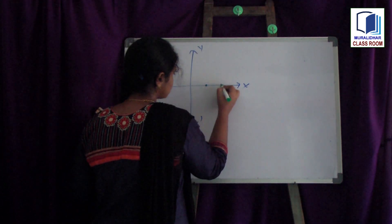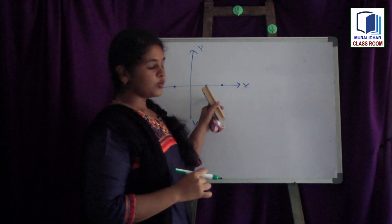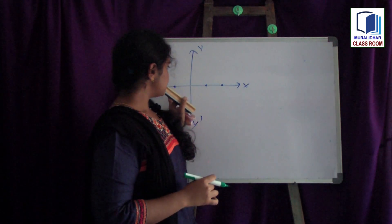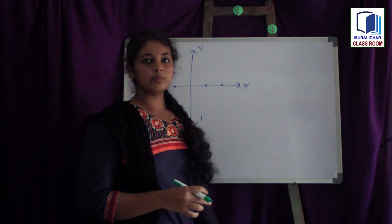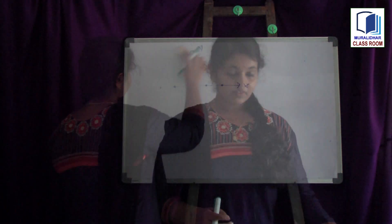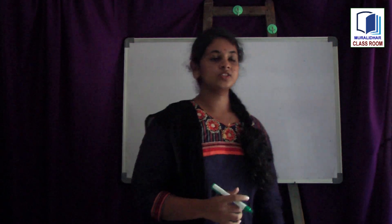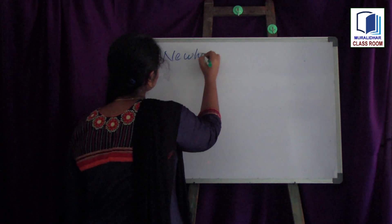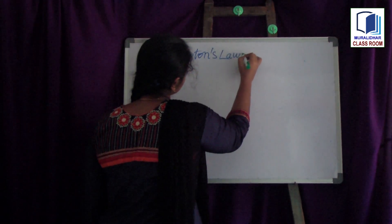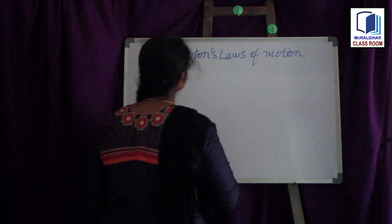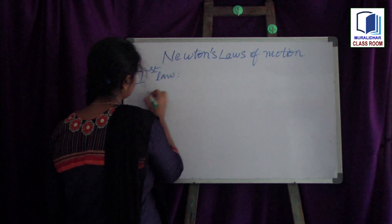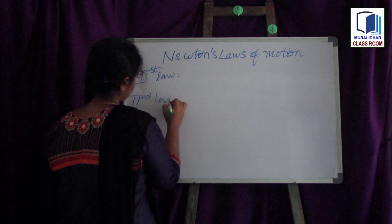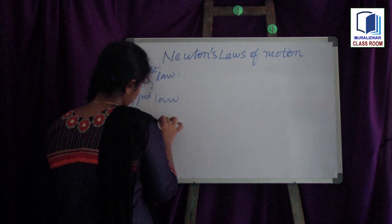One more point to remember: all the collinear forces are like forces, but not all the like forces are collinear forces. For example, considering the Cartesian plane with X, Y, Y dash and X dash, there are four points lying on the X–X dash line. These points are said to be collinear points irrespective of the quadrants — even though they are in different quadrants, they are collinear points. The same applies for forces.